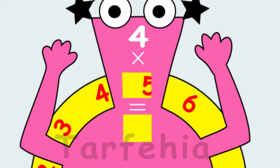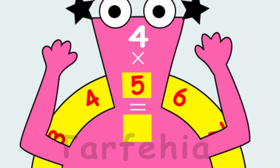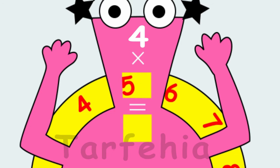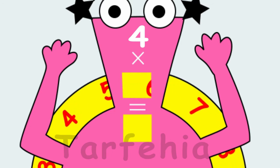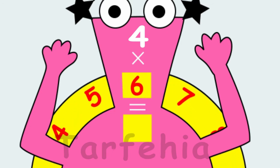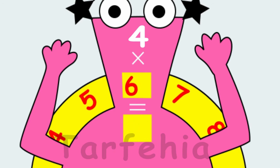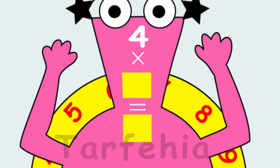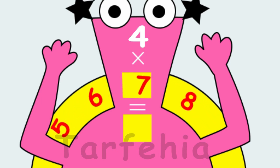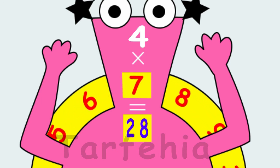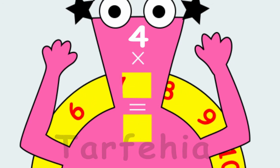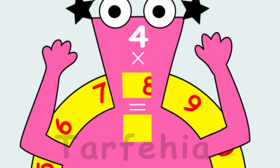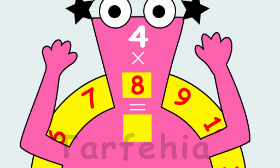Four times five equals twenty. Four times six equals twenty-four. Four times seven equals twenty-eight. Four times eight equals thirty-two.